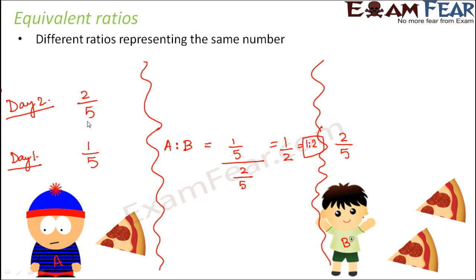So A ate two-fifths of pizza and how much did B eat? So B ate four slices of pizza out of five slices of pizza. So this is on day 2. So on day 2, if I ask you to find out the ratio of pizza eaten by A to B, that would be equal to A is to B.